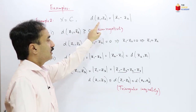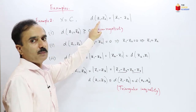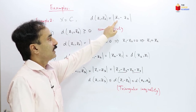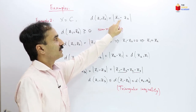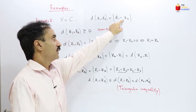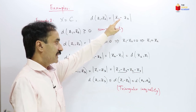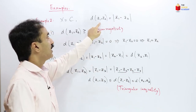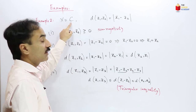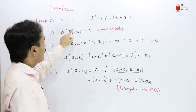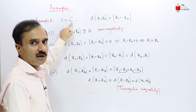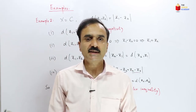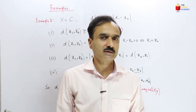This distance function between any two complex numbers defined by |z₁ − z₂| satisfies the axioms of a metric. So this is a metric on the set of complex numbers, and the set of complex numbers is a metric space. Let's have another example of a metric space.